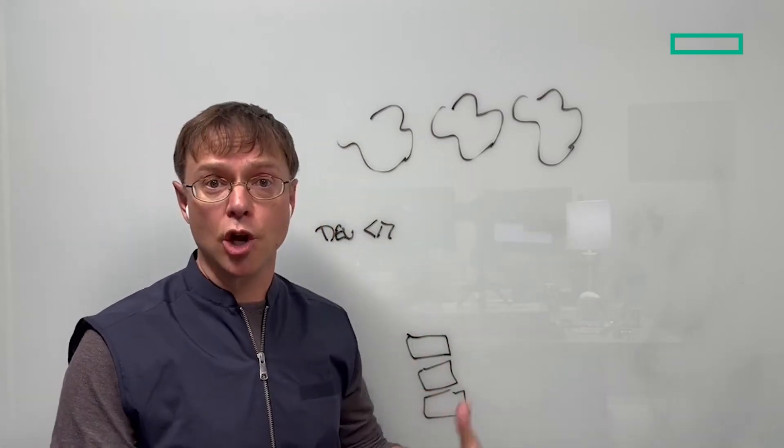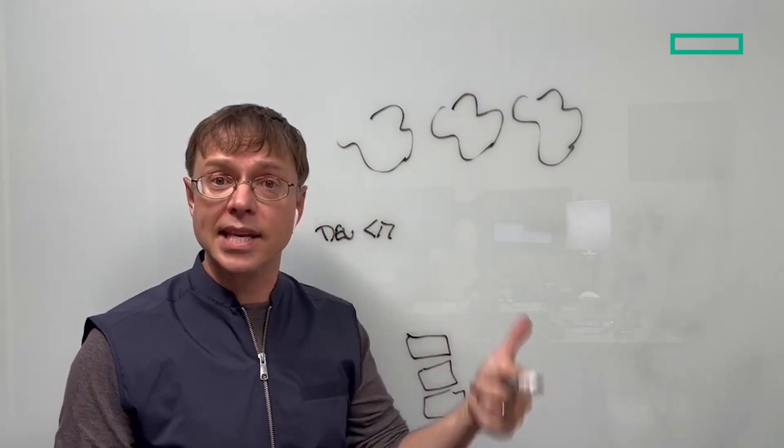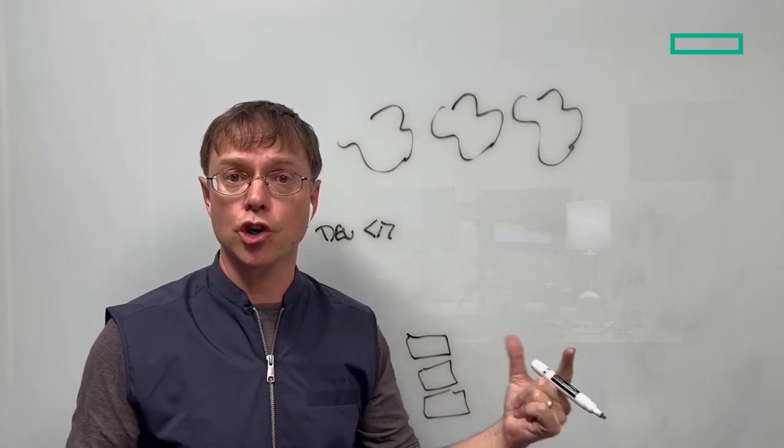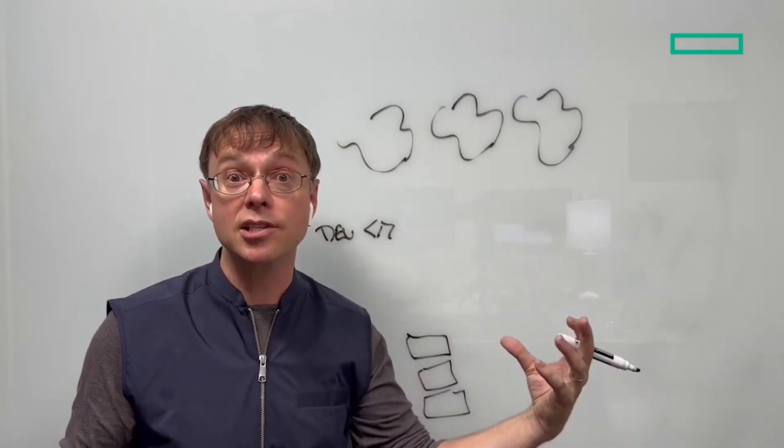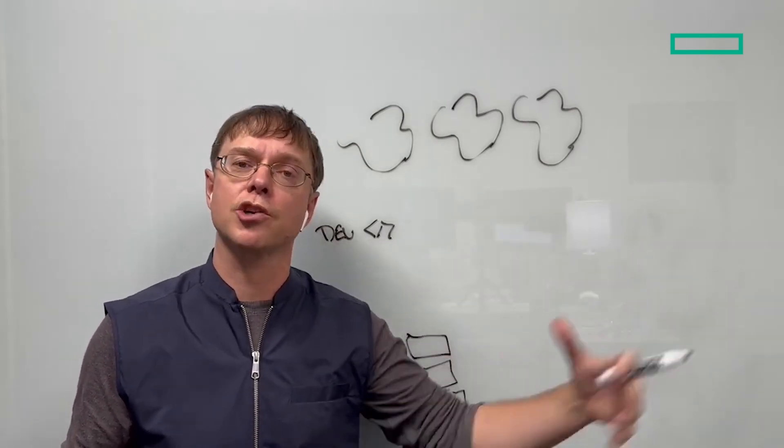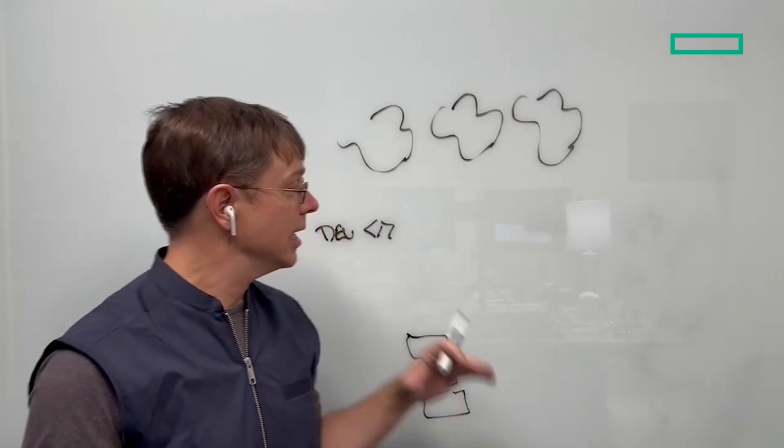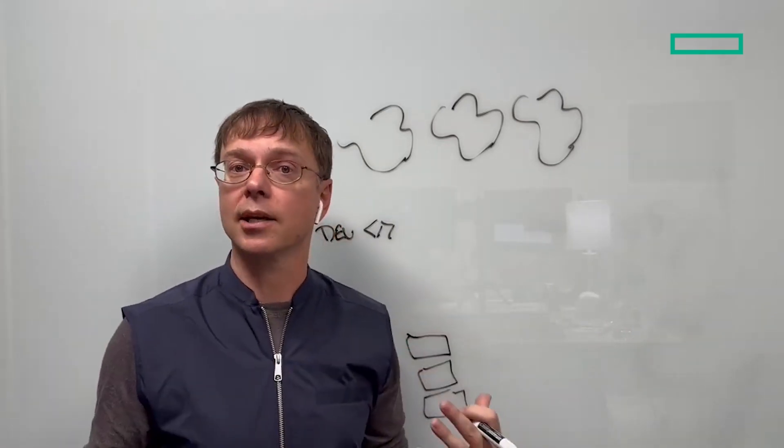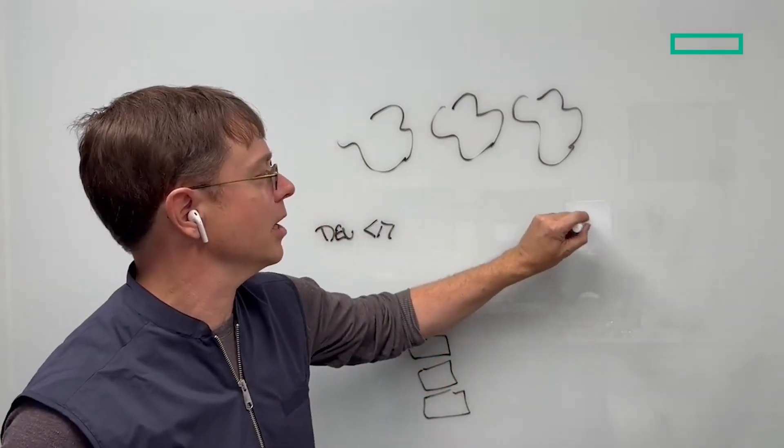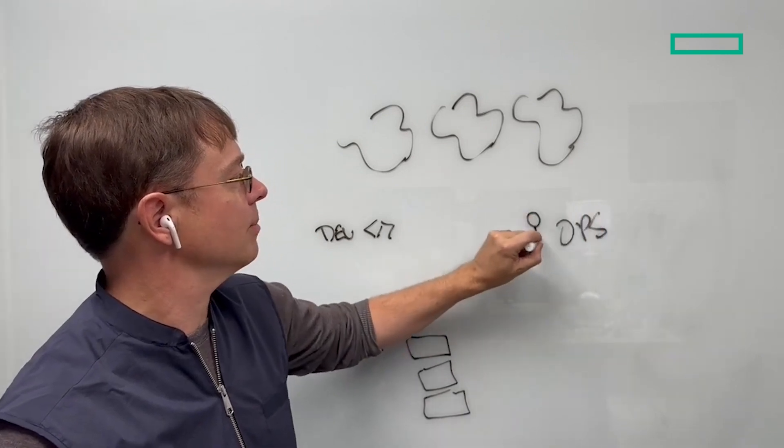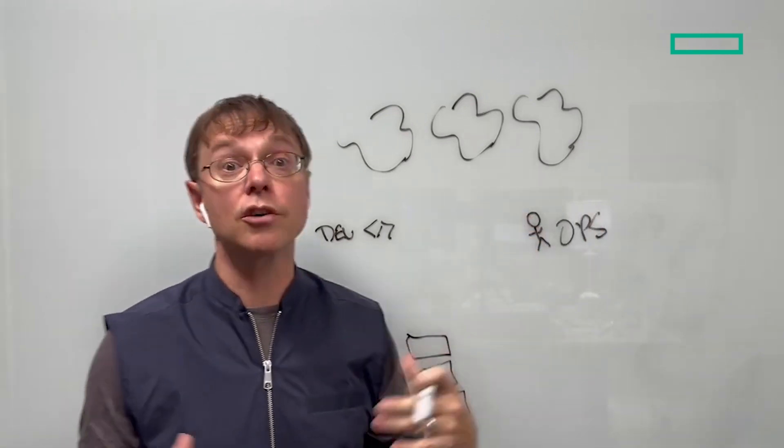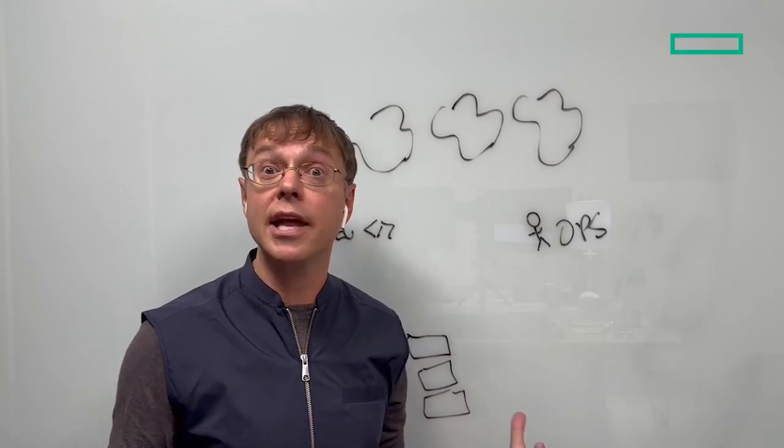Every time they push a piece of code, they need to test that environment, do quality assurance. They'll usually stage that somewhere and then finally push it into production for all of us to use. Each of those environments that get created become the remit of the operations team. They're in charge of the service levels, the care and feeding of all of that infrastructure.